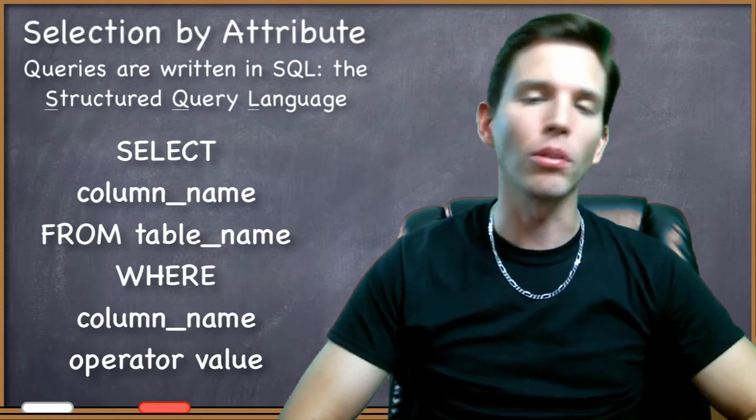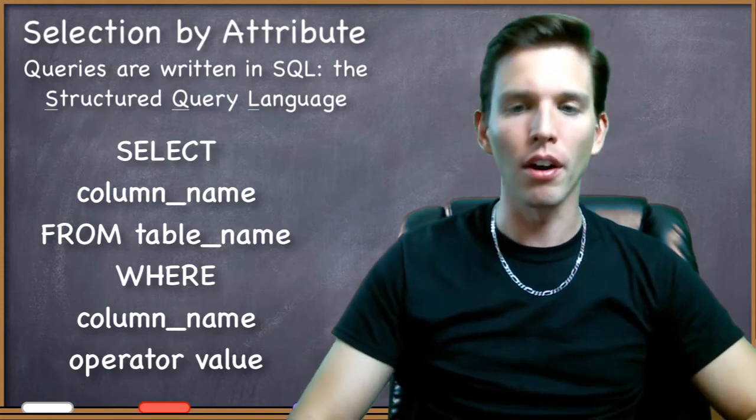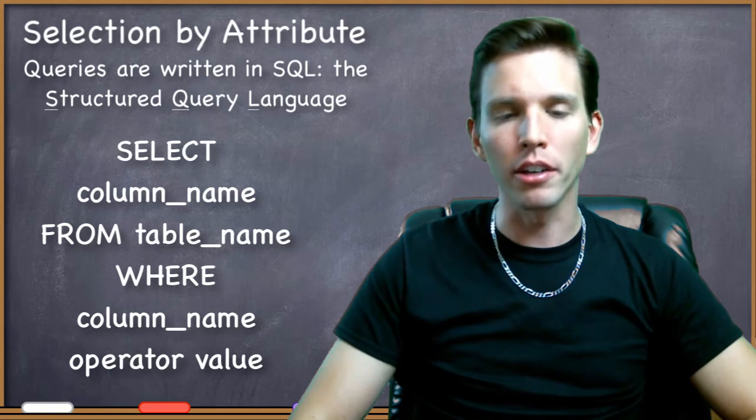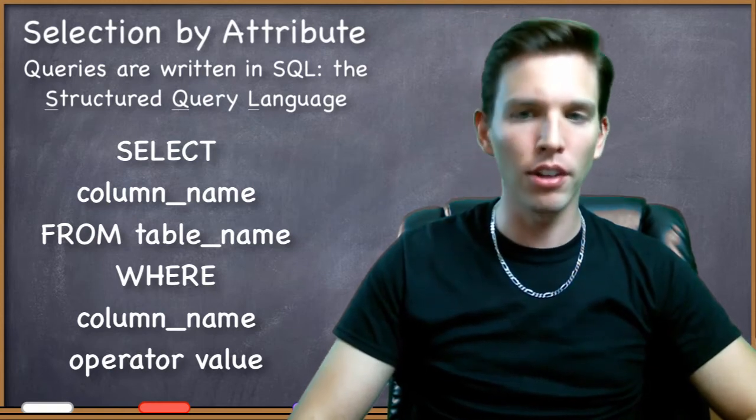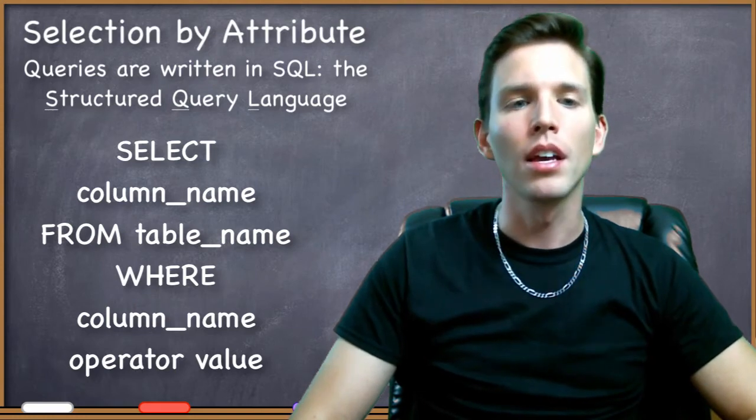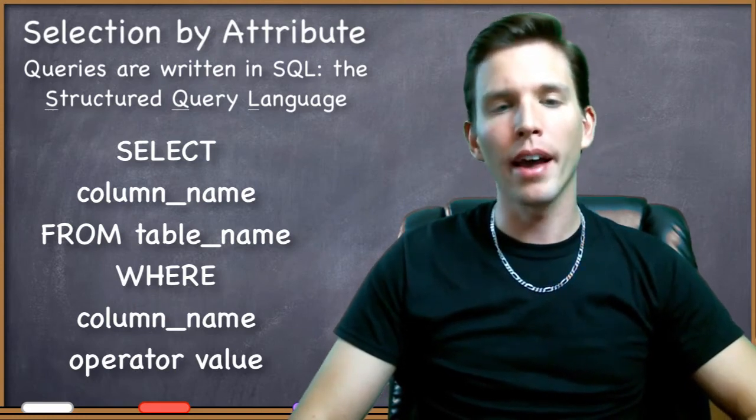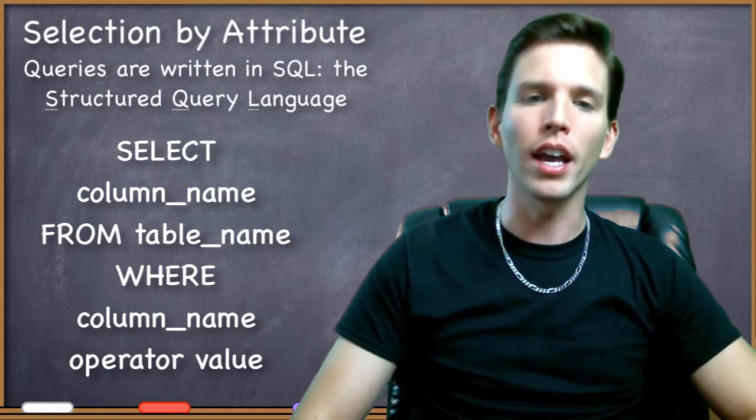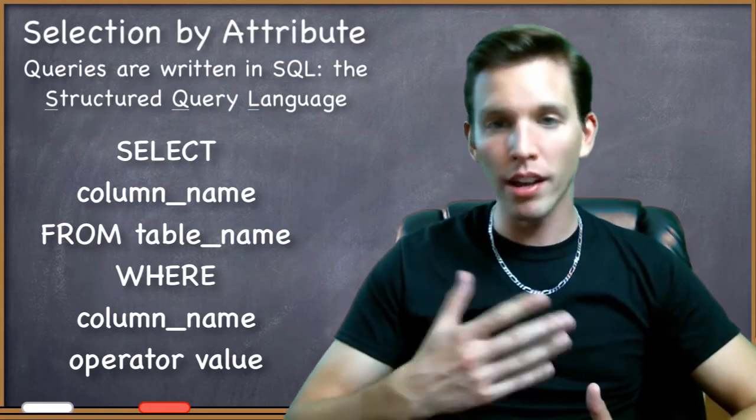The operator value is where you specify the criteria that you want to use to execute that query. If you use the select-by-attribute dialog box in ArcGIS, you're going to notice that it tries to help you set up this query by writing something like this along the top of the query builder dialog box.